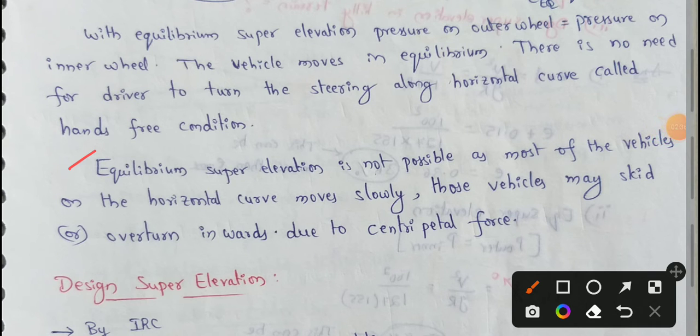Equilibrium super elevation is not possible as most of the vehicles on horizontal curves move slowly. Those vehicles may skid or overturn inward due to centrifugal force.